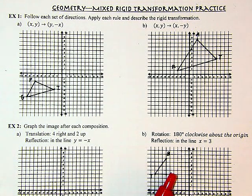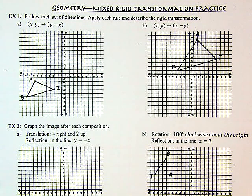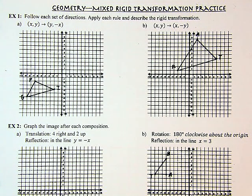Today we are taking on a little mixed rigid transformation practice. All of our rigid transformations preserve the size and shape — we're just altering the place and position. So the pre-image and the image are always perfectly congruent; they're just in a different location on the coordinate plane.